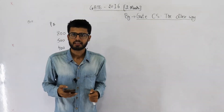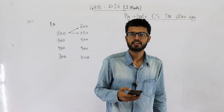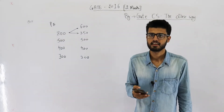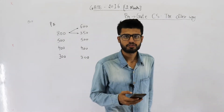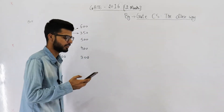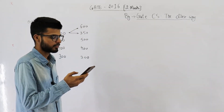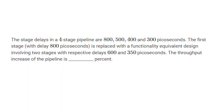Hello and welcome. This question is from the GATE 2016 exam — it's a 2-mark question from Set 1. Let me read out the statement: the stage delays in a four-stage pipeline are 800, 500, 400, and 300 picoseconds.